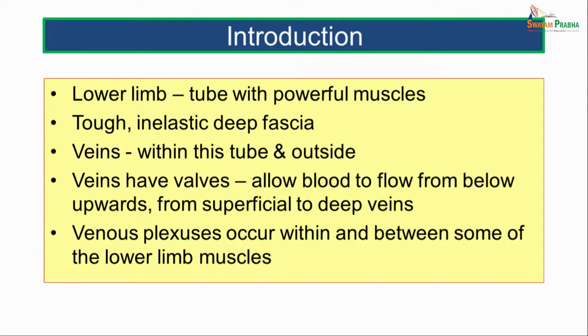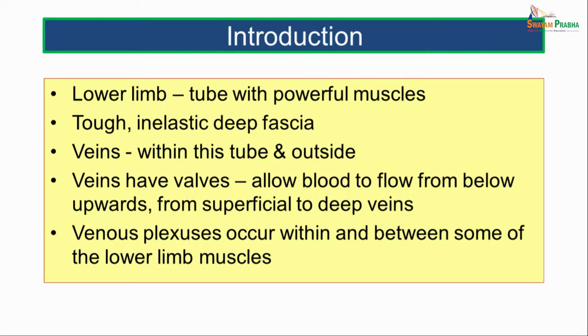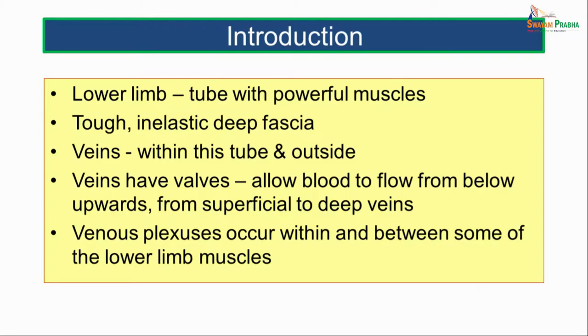Introduction. The lower limb is a tubular structure with powerful muscles. These muscles are held together by a tough inelastic deep fascia which covers the limb like a stocking — that is what we call the fascia lata. The veins of the lower limb lie within this tubular structure or outside the fascia lata. We can classify them as superficial veins, which lie in the superficial fascia, and deep veins, which accompany the arteries and lie deep to the fascia lata between the muscles. The veins have valves, and these valves allow blood to flow from below upwards and also from the superficial veins to the deep veins, thus pushing the blood anti-gravity towards the heart.